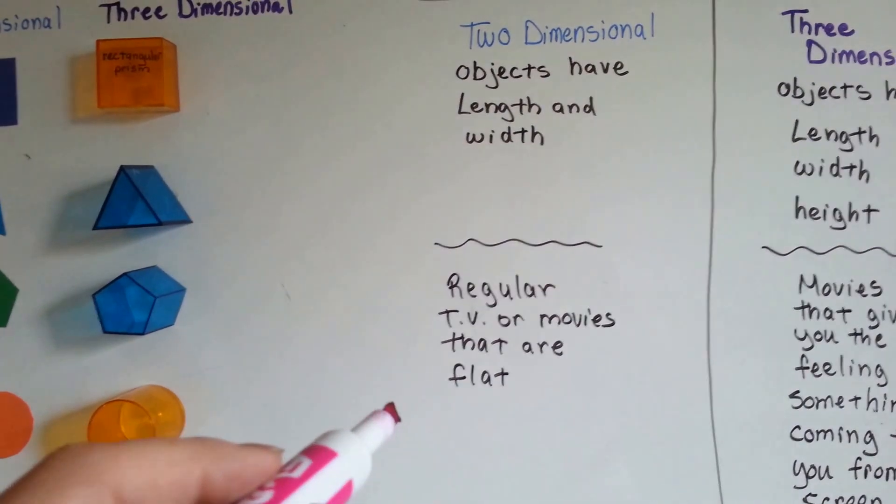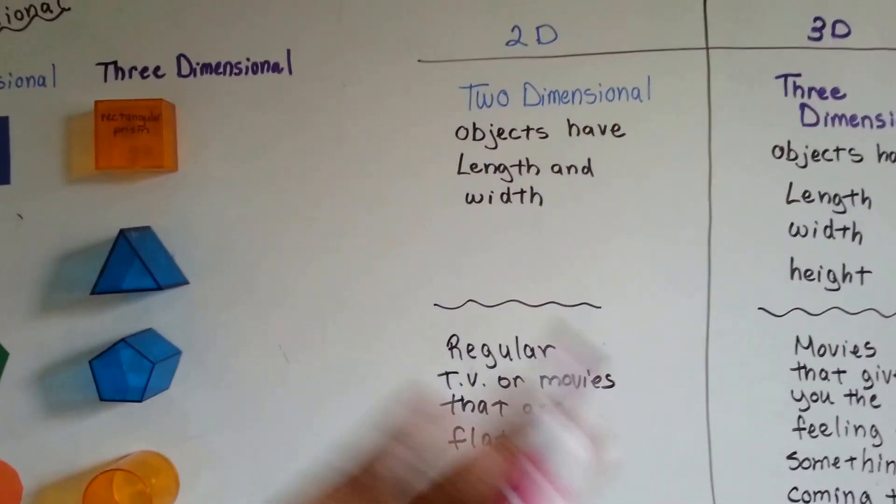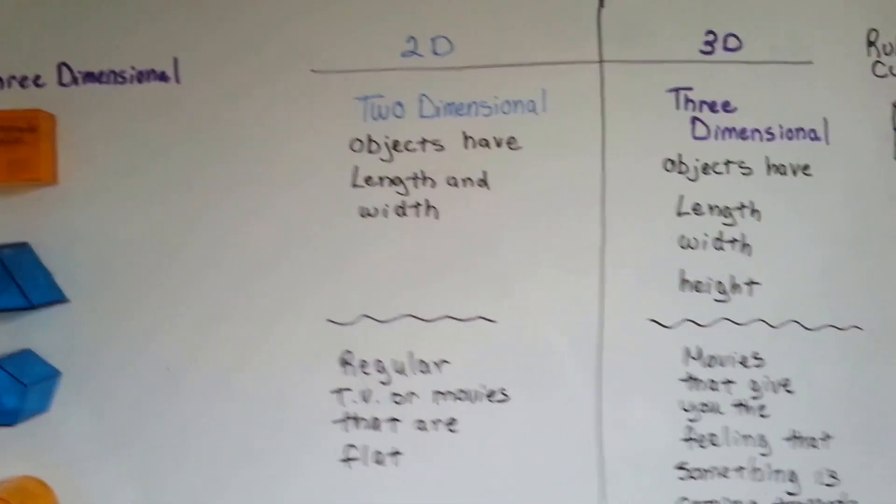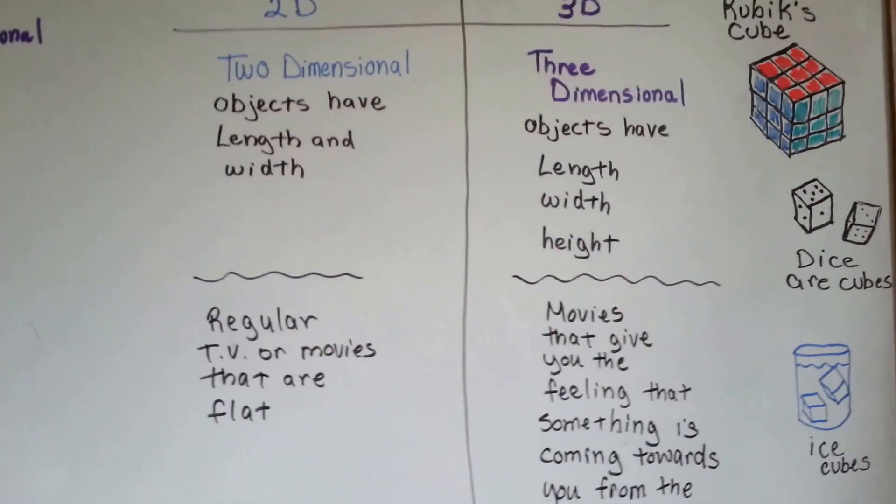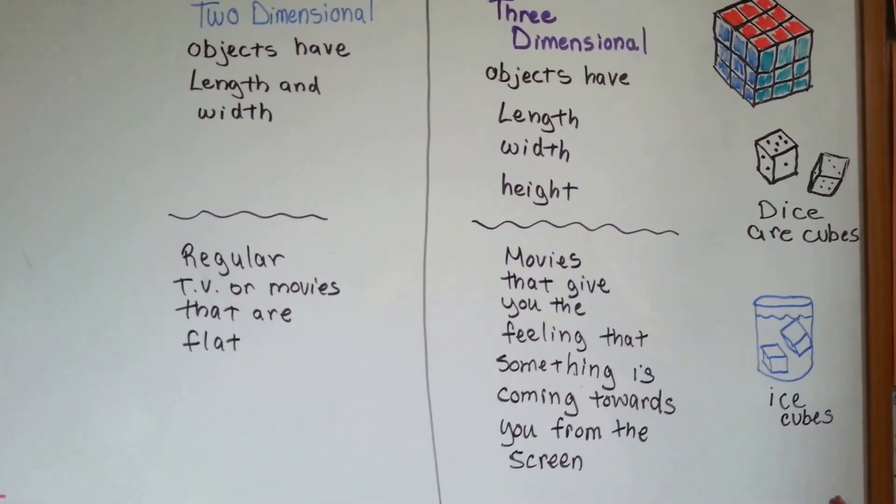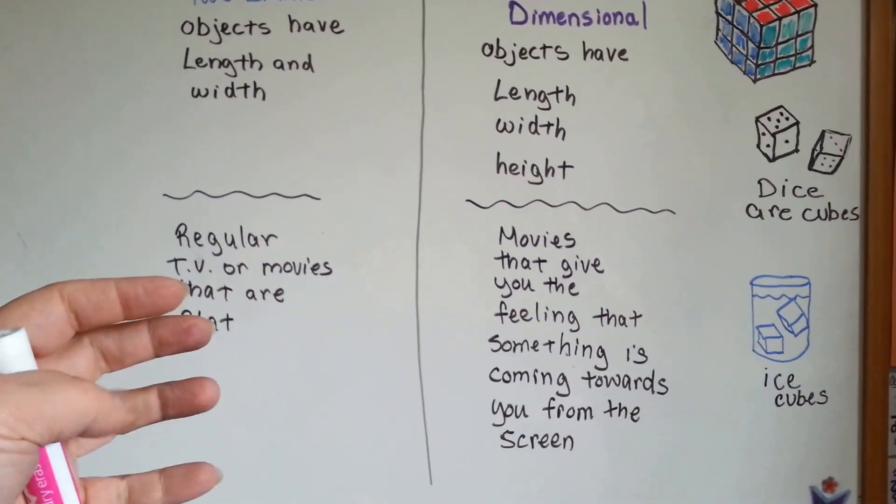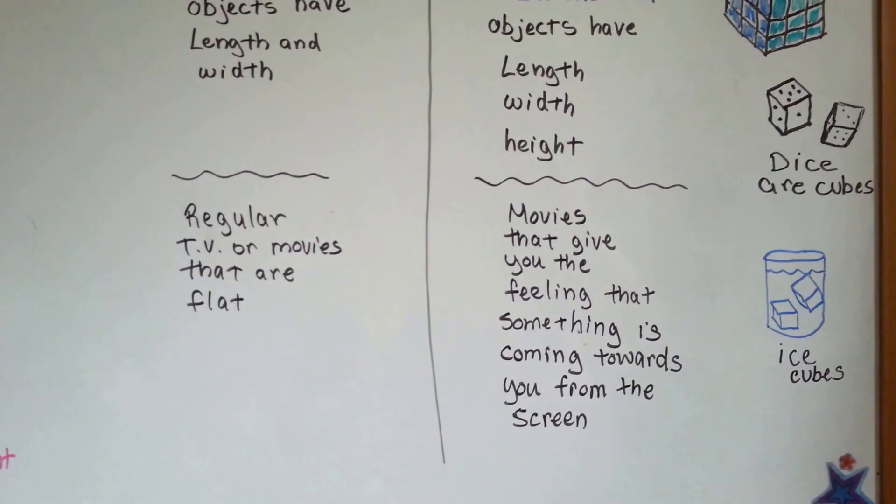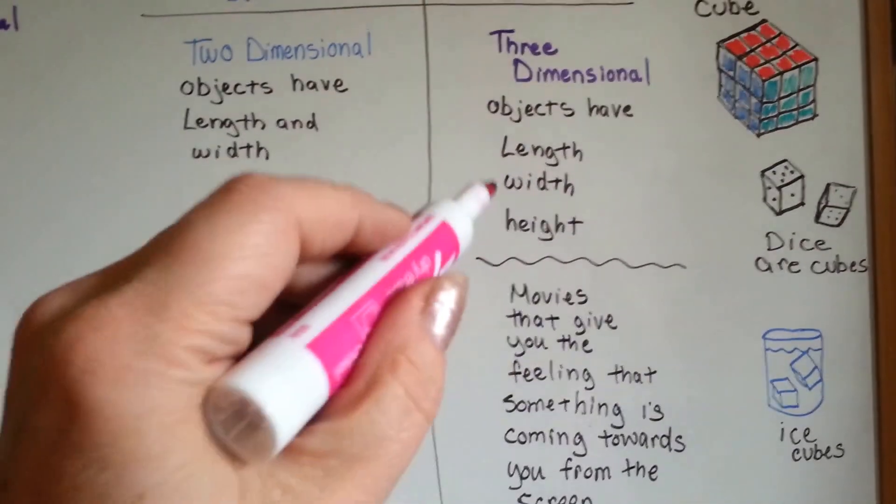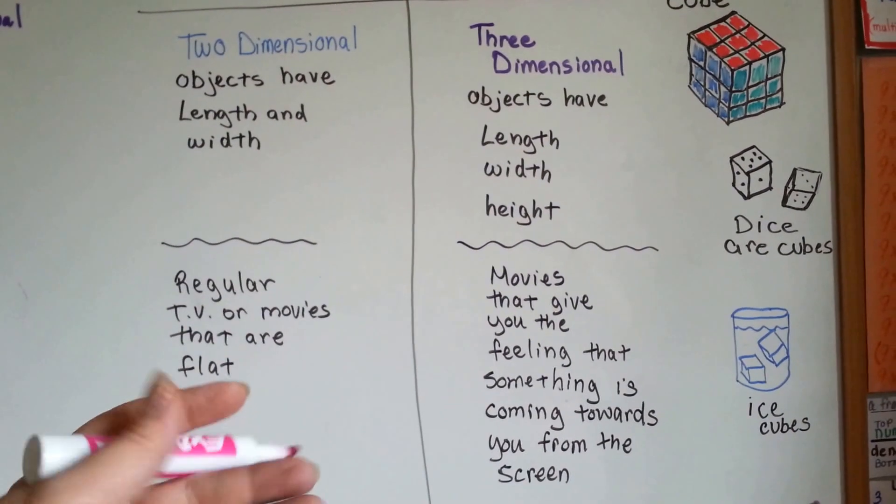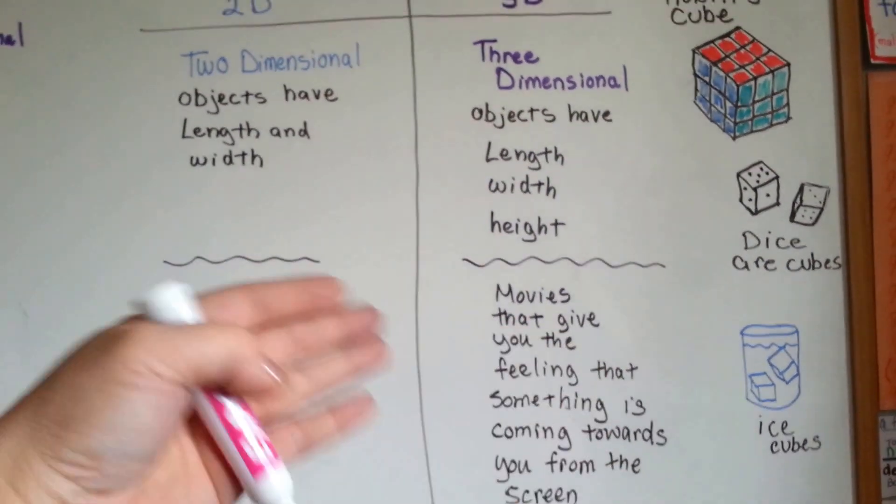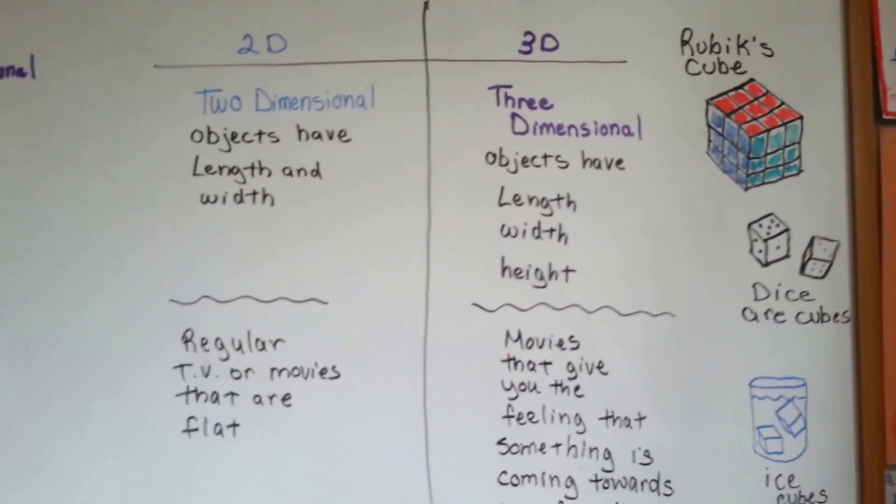Regular TV or movies that are flat are two-dimensional. But if you've ever gone to a movie where they give you those cool glasses and it gives you that feeling that something's coming towards you at the screen, that's a 3D movie, because it has depth or height to the vision because you're wearing those glasses.